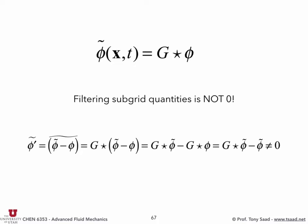We write the filter operation simply as G star phi, which is an integral. To prove that filtering subgrid quantities is not zero: a subgrid quantity phi-prime equals phi-tilde minus phi. Apply the filter: that's G star phi. By linearity, decompose as G star phi-tilde minus G star phi. Now G star phi is phi-tilde, but G star phi-tilde is not phi-tilde and is not zero in general.